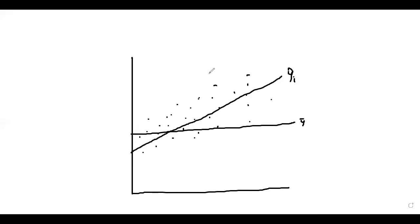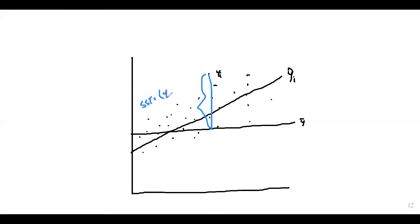Let's take a random data point — this is y_i. The variation of y_i, or its deviation from the mean ȳ, represents SST, the total sum of squares. The distance from ȳ to this data point y_i is SST, written as (y_i minus ȳ) squared.